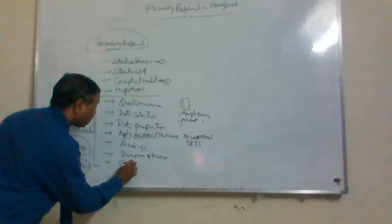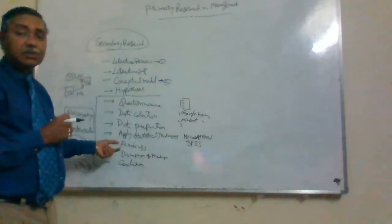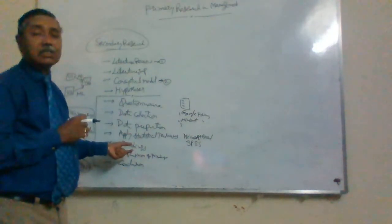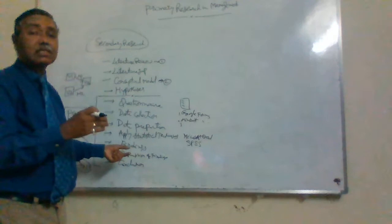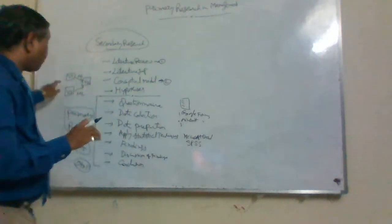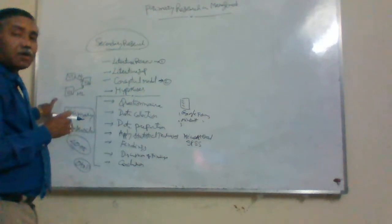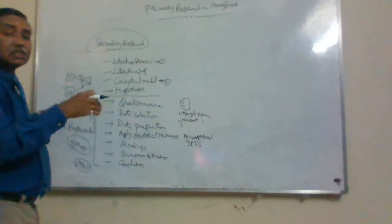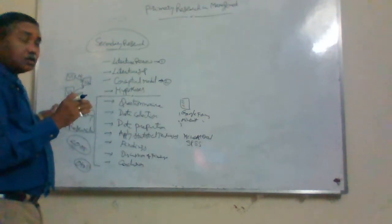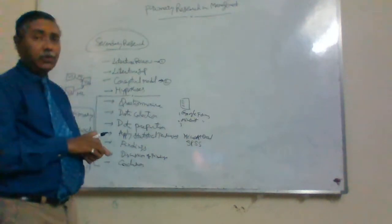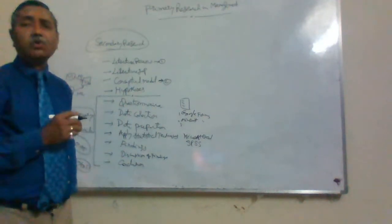Next comes the conclusion and scope for further study. Specify your contribution — what is your value addition from this research. Also specify areas where further researchers across the world can extend your research. For example, if you considered only three variables in HR research in the IT industry but left out three or four others, specify in the scope for future research that including those additional variables can also be explored.